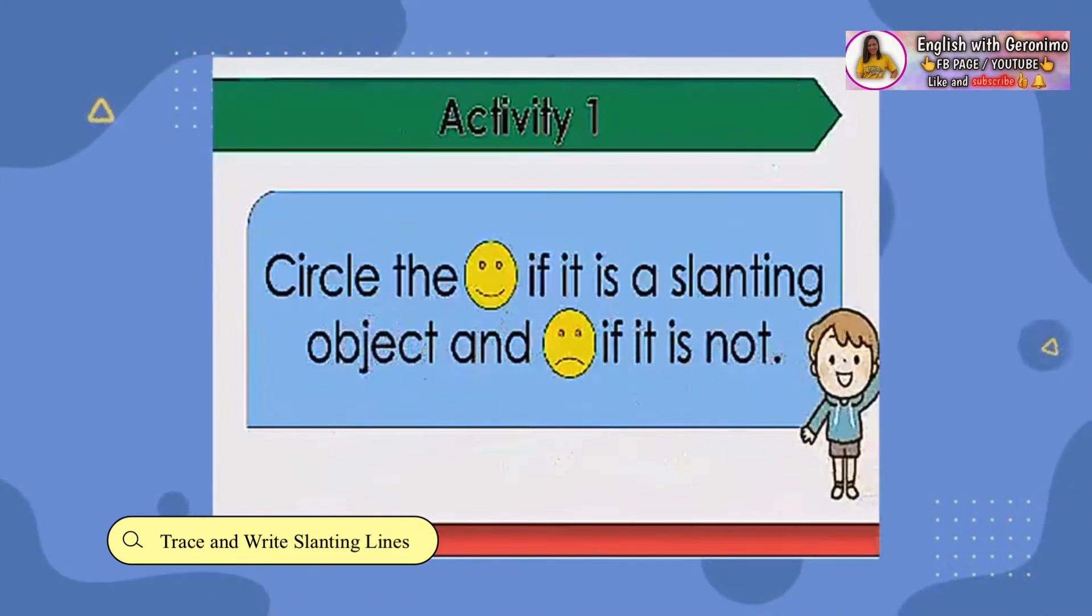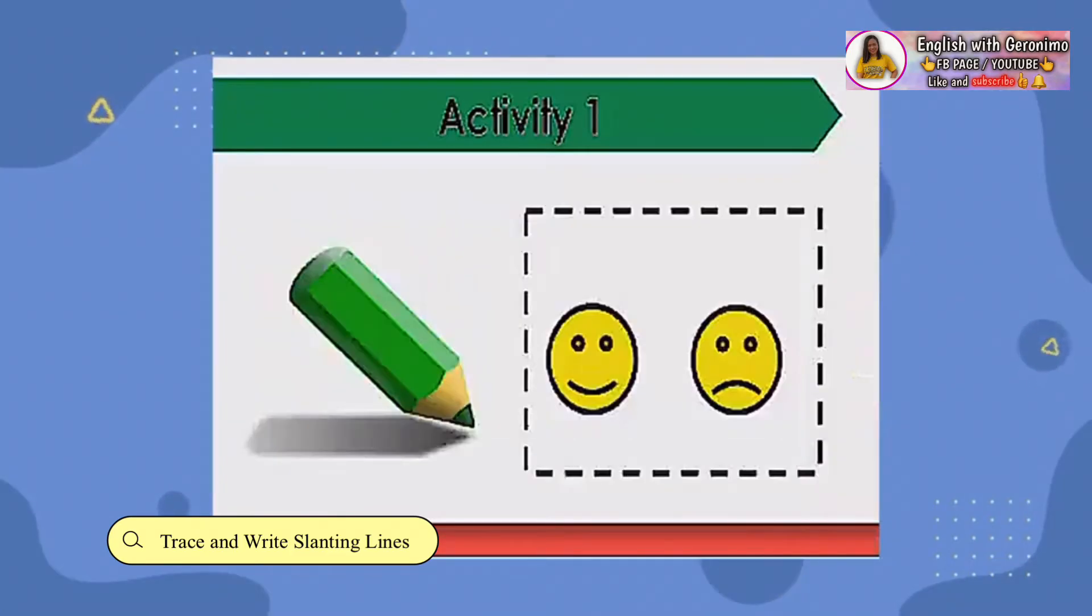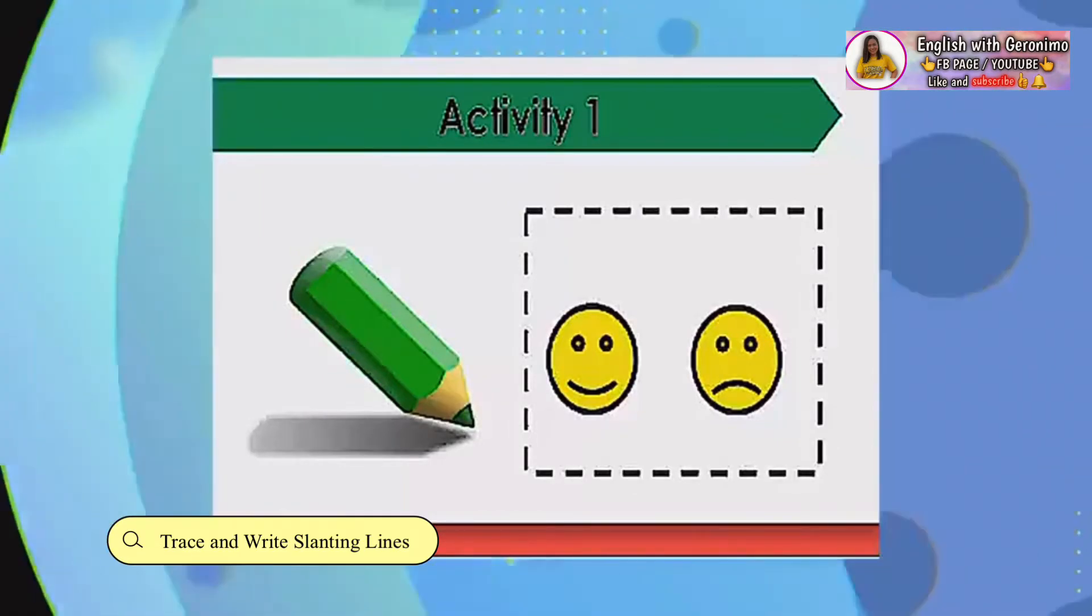For our first activity, circle the smiling face if it is a slanting object, and circle the sad face if it is not. What will you circle?